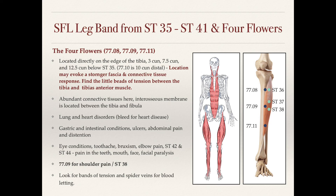Let's take a look at the next page where we're going to talk about the four flowers. We've already discussed these briefly; we're going to go into a bit more detail now. Remember that when we're speaking of these points — 77.08, 77.09, through 77.11 — we're essentially discussing the stomach line. But with these groups of points, we're locating these points on the edge of the tibia rather than one sun away and in the muscles.